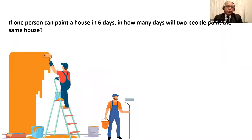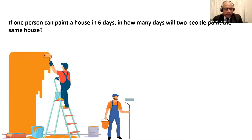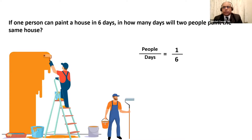Let's look at this particular situation. If one person can paint a house in six days, in how many days will two people paint the same house? Now this looks familiar — we have done direct proportion. So let's look at the ratio of people to days: one person, six days. The question is two people, how many days?